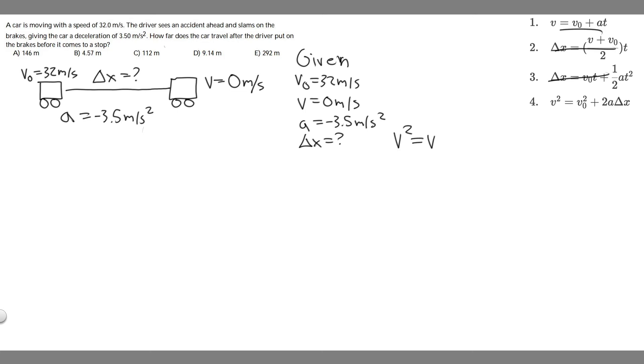If I rewrite the equation, V squared equals V sub zero squared plus 2A times delta x. So what we want to do is just go ahead and plug in. V is zero, zero squared is still zero, equals V sub zero squared, which is just 32 squared, plus 2 times A, which is minus 3.5, and then multiply it by delta x, because that's what we're solving for.